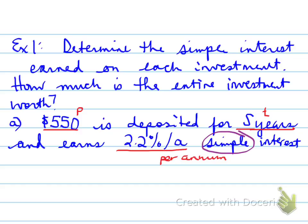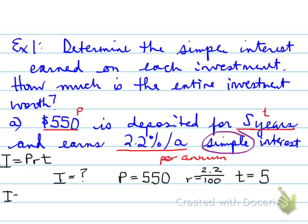And again, the word simple shows up, so that tells us we must use simple interest. So you set out the letters, IPRT letters. And IPRT letters, and you get I equals, don't know, P equals 550, R equals the decimal value of the 2.2%, which is 0.022,